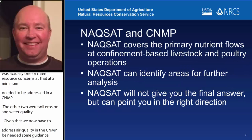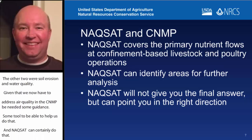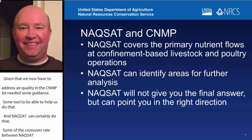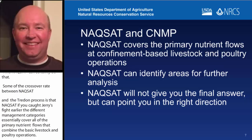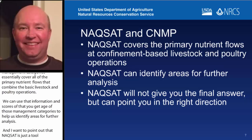Some of the crossover between NACSAT and the CNMP process is that NACSAT's different management categories essentially cover all the primary nutrient flows at confinement-based livestock and poultry operations. We can use the scores you get in each of those management categories to help us identify areas for further analysis. NACSAT is just a tool that can help point us in the right direction — we're still going to rely on our conservation planners to make decisions based on all available information, including the scores you get out of NACSAT.